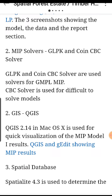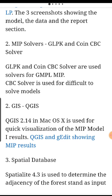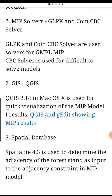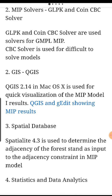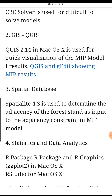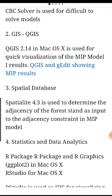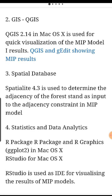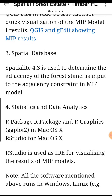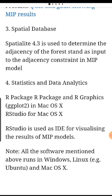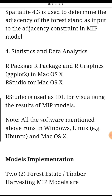Number two: MIP solvers — GLPK and CoinCBC solver. GLPK and CoinCBC solver are used solvers for GMPL MIP. The CBC solver is used for difficult-to-solve models. For GIS: QGIS 2.14 in Mac OS X is used for quick visualization of the MIP model. Number three: spatial database. SpatiaLite 4.3 is used to determine the adjacency of the forest stands as input to the adjacency constraint in the MIP model.